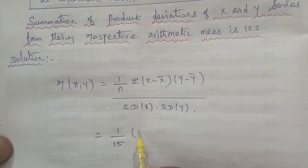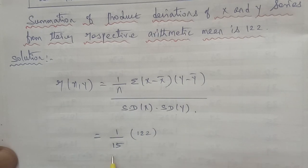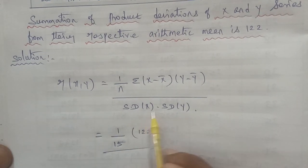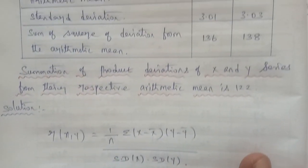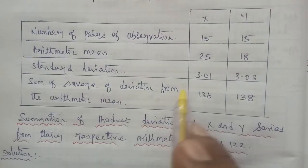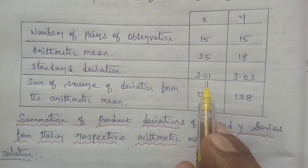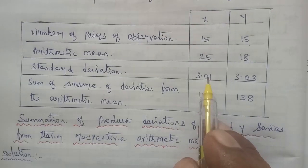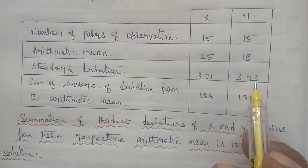Standard deviation of X, standard deviation of Y. The standard deviation of X is 3.01. Y's standard deviation is 3.03.